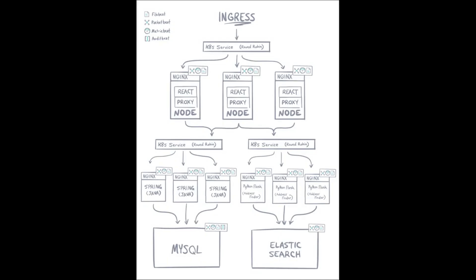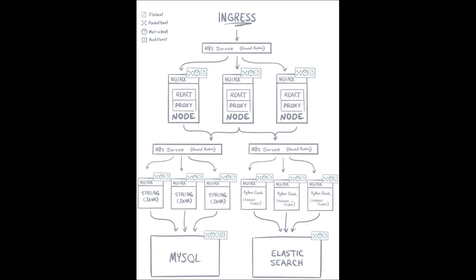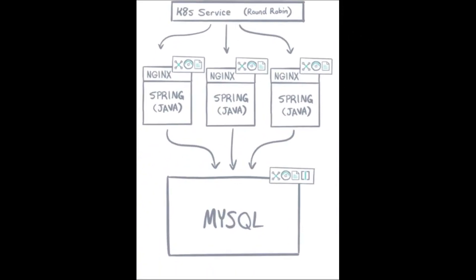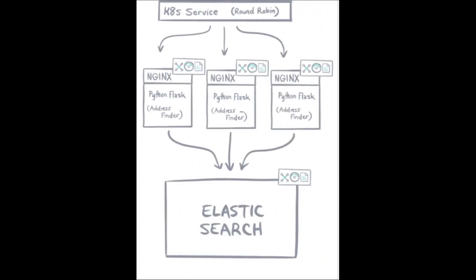For this demo, I'll be running a Pet Clinic application deployed in a Kubernetes cluster running on three large 64-core nodes. The application consists of an NGINX, React, Node.js front-end, Java Spring, and MySQL for application logic, and Python with an Elasticsearch backend for the address lookup service.